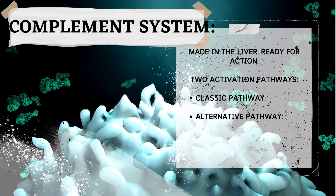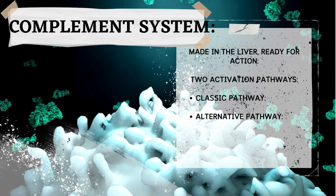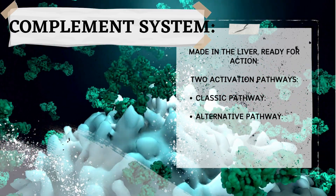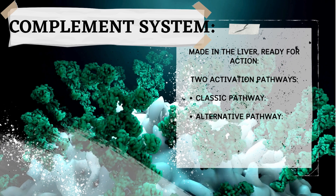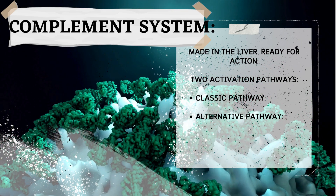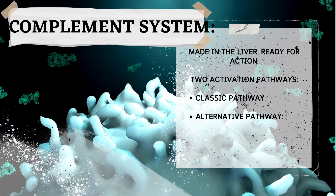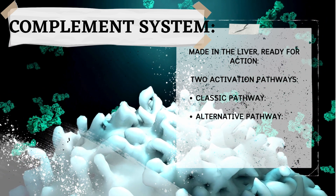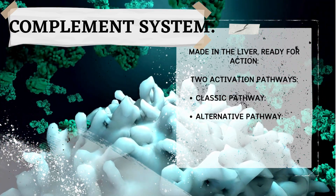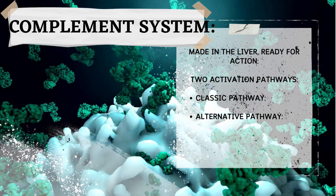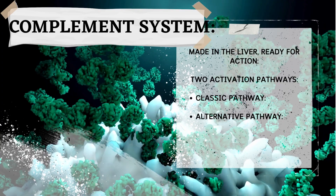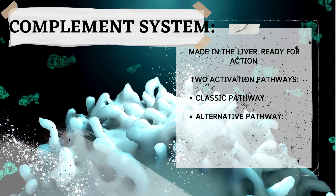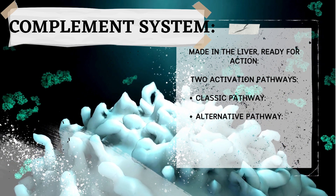There are two main ways to activate the complement system. First, the antibody alarm: if antibodies — disease fighters made by your immune system — spot a pathogen, they tag it for destruction. This triggers a cascade of complement proteins that poke holes in the pathogen's surface, lysing (bursting) it. Second, direct attack: some pathogens have suspicious molecules on their surface that can directly set off the complement cascade, leading to lysis without needing antibodies.